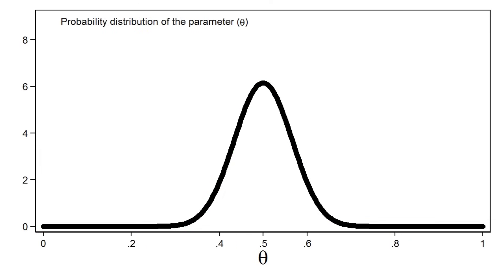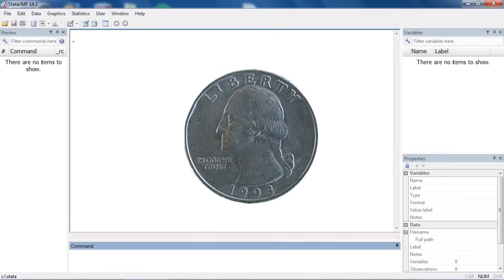The Bayesian approach is a different way of thinking about statistics. Parameters are treated as random variables, which can be described with a probability distribution. We don't even need data to describe the distribution of a parameter — probability is simply our degree of belief. Let's consider a simple example to develop our intuition.